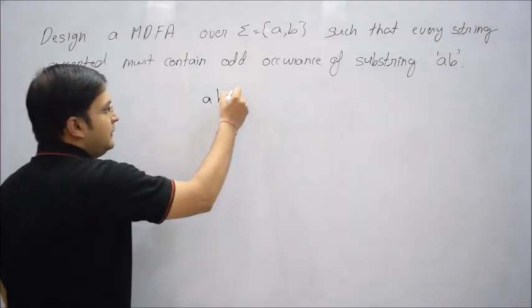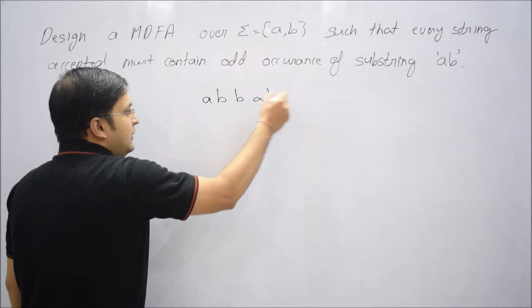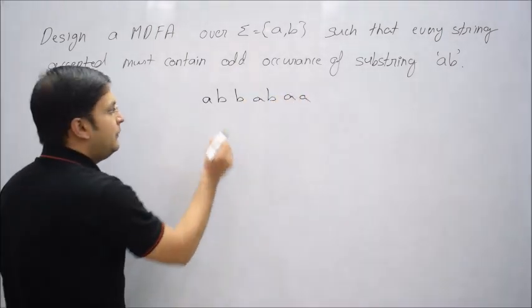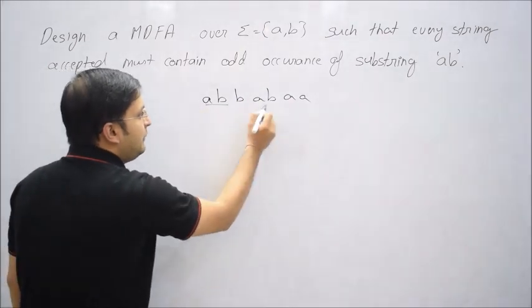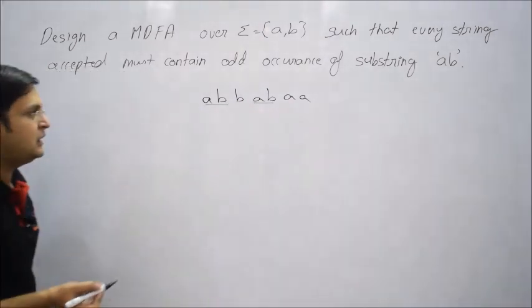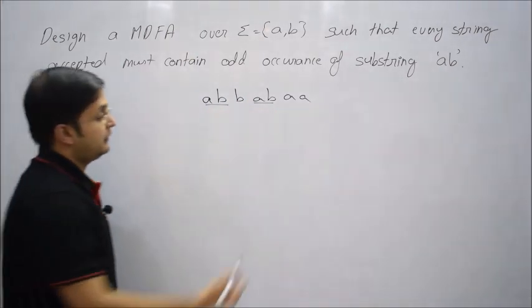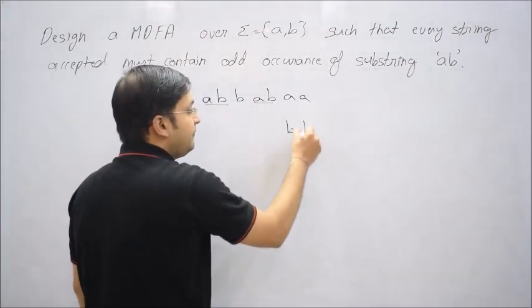For example, if AB comes and then B, AB and then AA like this. How many times does that substring AB come? Here comes AB and here comes AB. Total occurrence is two times, so it does not be accepted.